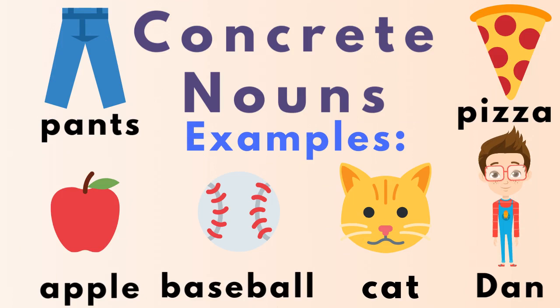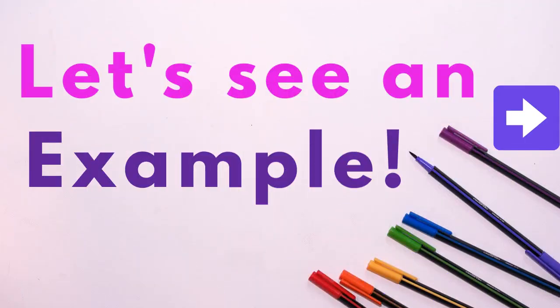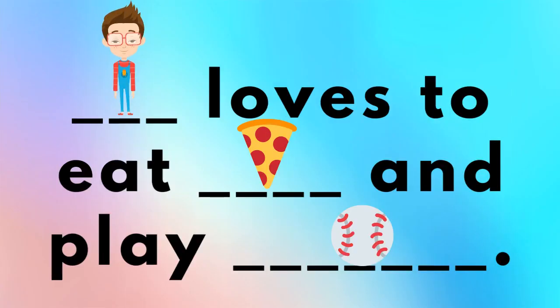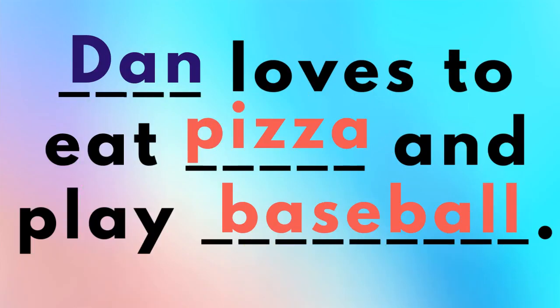Concrete nouns — here are some examples. Can you say them with me? Pants, apple, baseball, cat, Dan, pizza. Dan loves to eat pizza and play baseball. What's the proper noun? It's Dan. And the common nouns? Pizza and baseball.